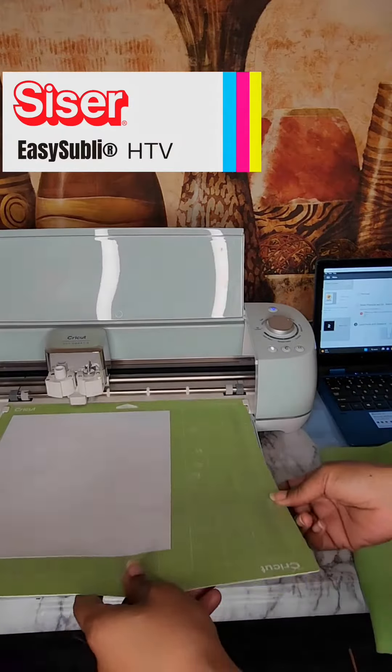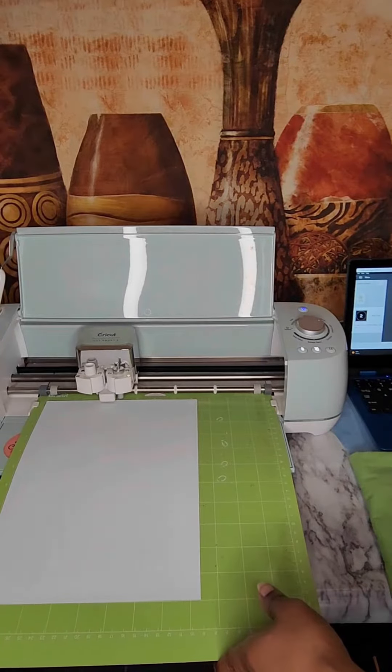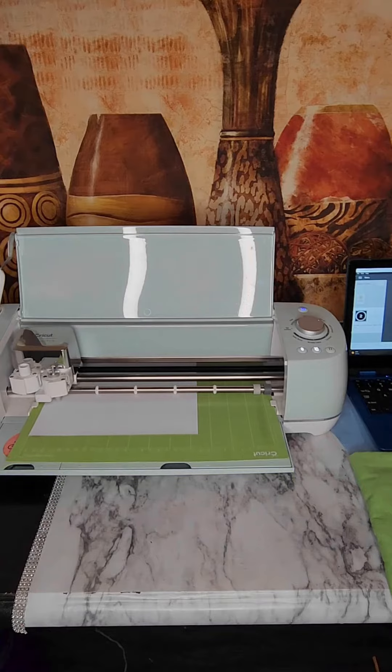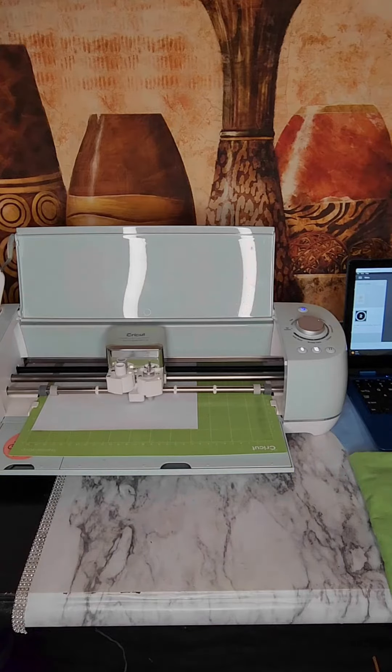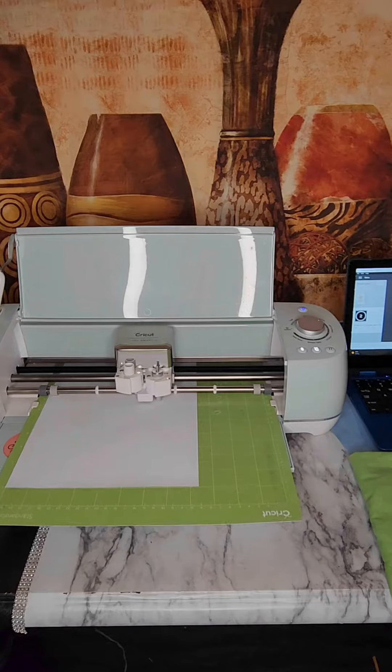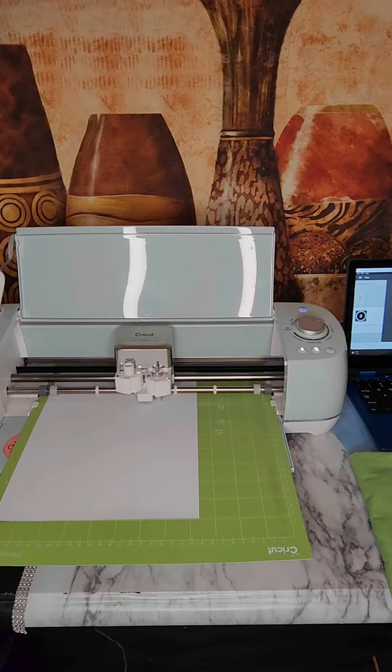How to use Sizer Easy Subli Vinyl. Lay the vinyl rough side up on the cutting mat. You don't need to mirror your cut image.